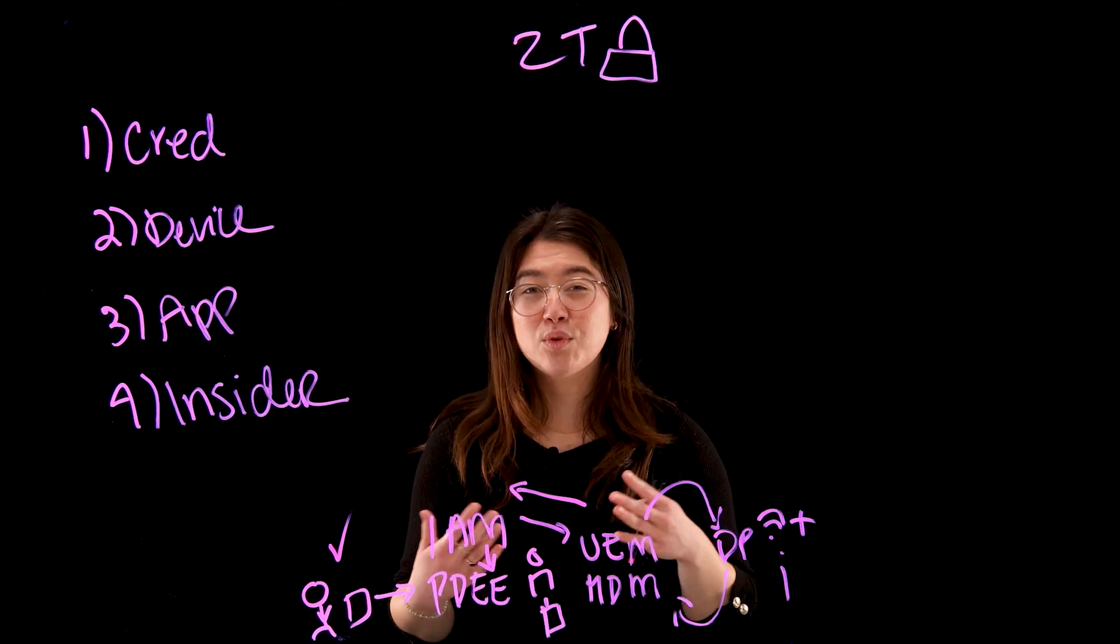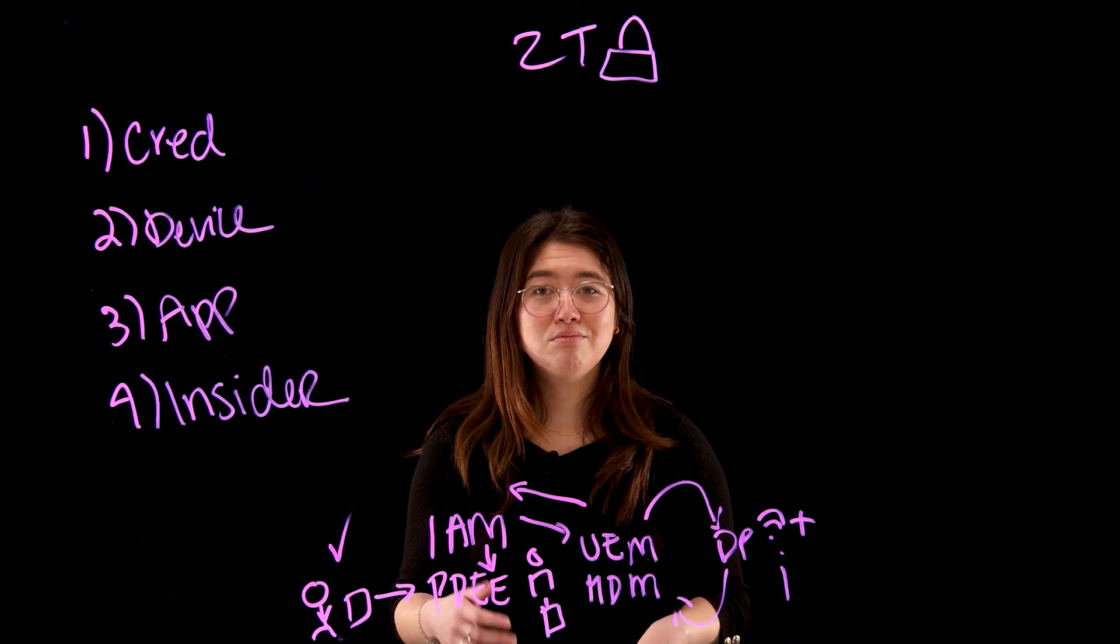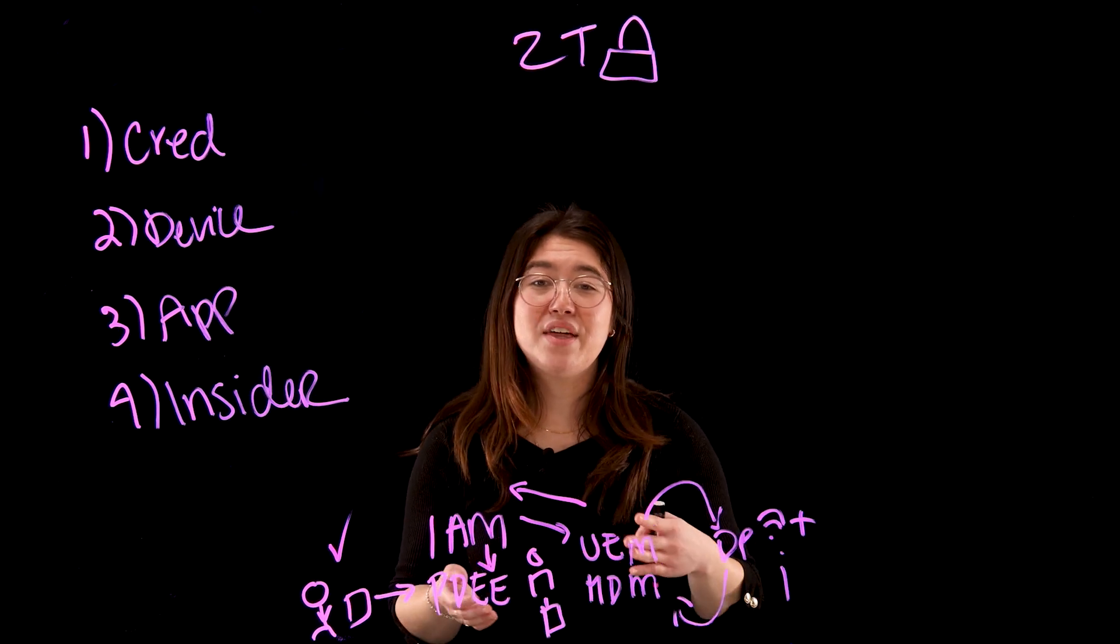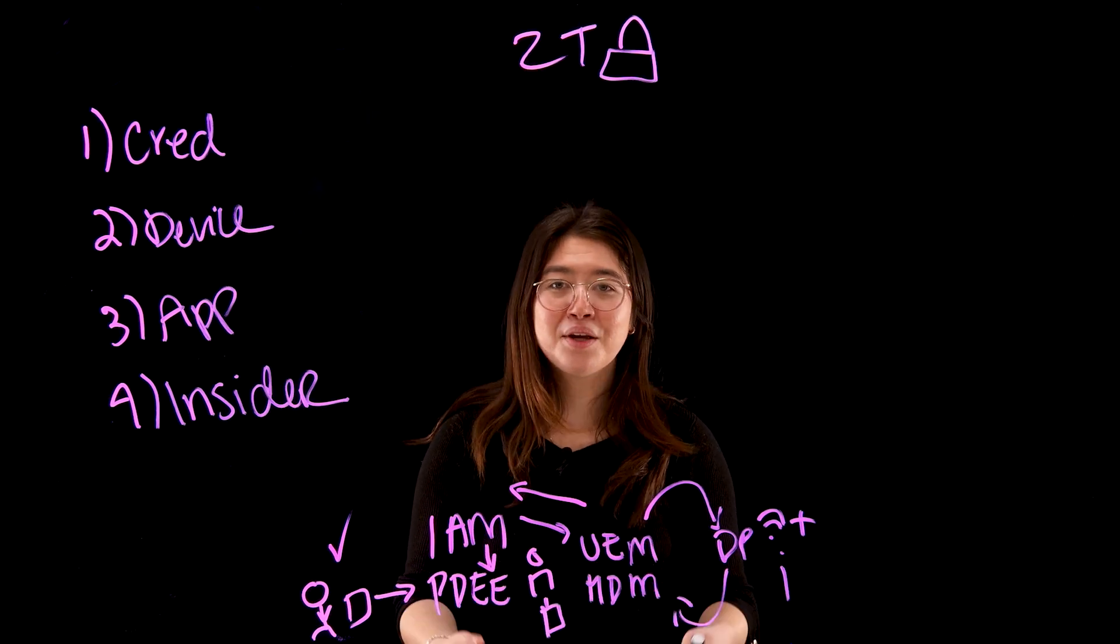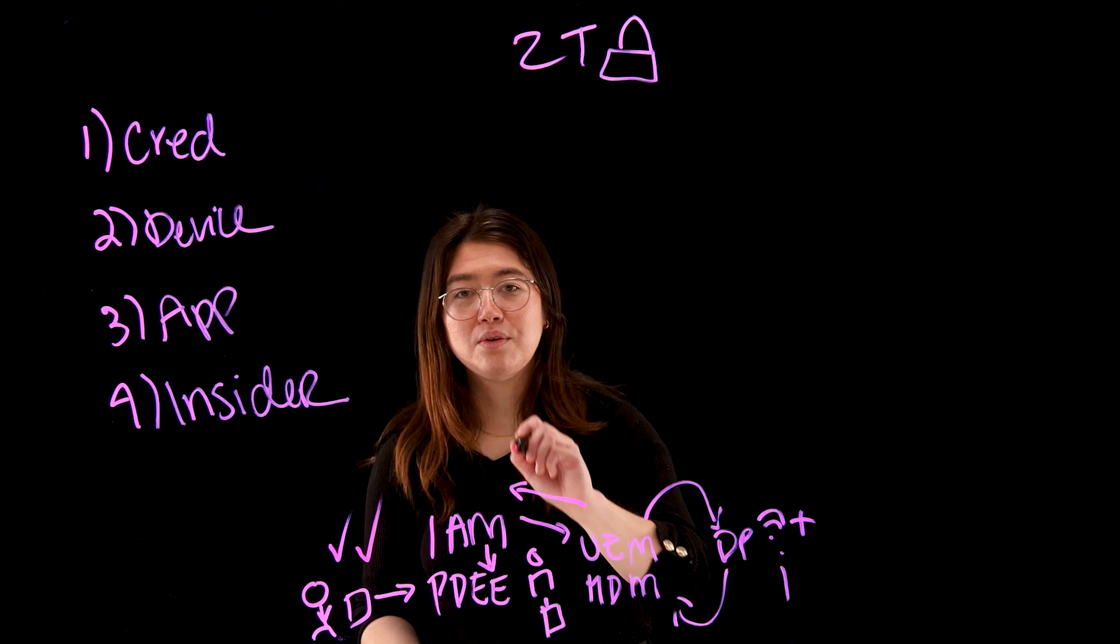However, if a risk was raised, for example, two requests coming from her account within a span of five minutes in two different locations, there would be an additional authentication check, like typing in a passcode that was sent to her device. Providing she's able to do that, she'll be able to get access to those files.